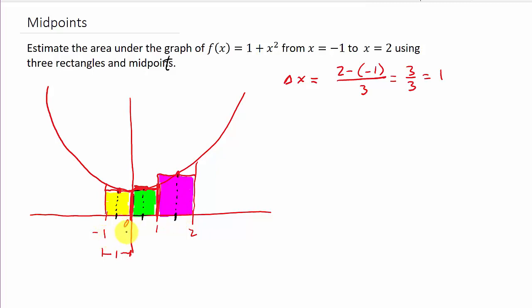Well, halfway between negative 1 and 0 is negative one-half. Halfway between 0 and 1 is one-half. And then halfway between 1 and 2 would be three-halves. Remember how to get the midpoint between two points? Two numbers, you add them together and divide by 2. And so that would give us the three-halves.